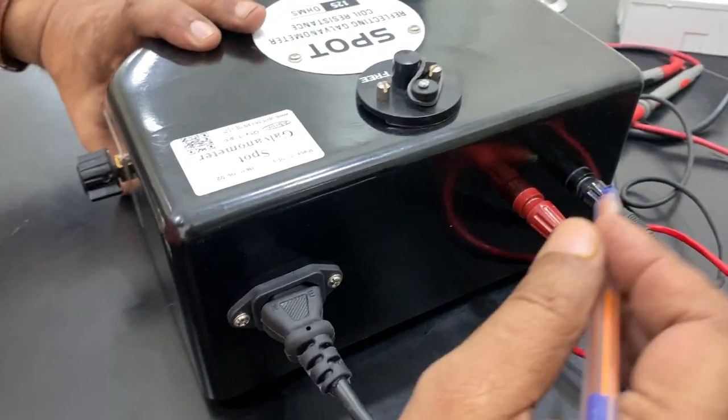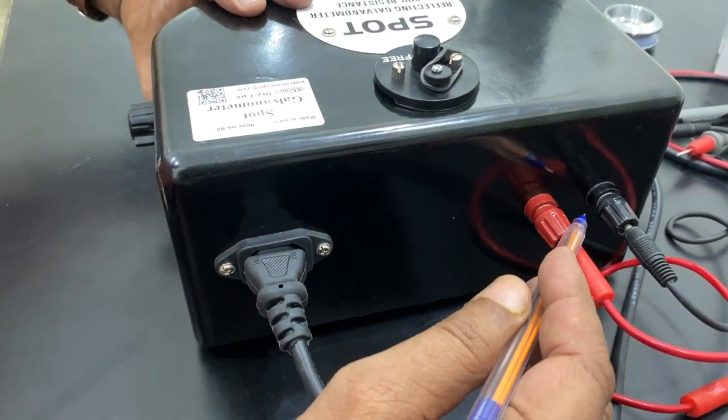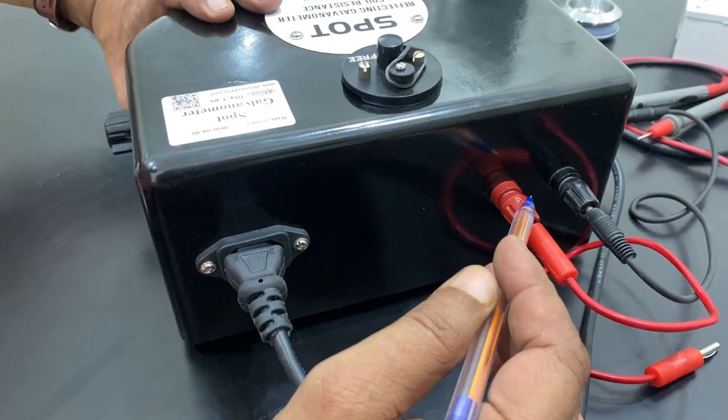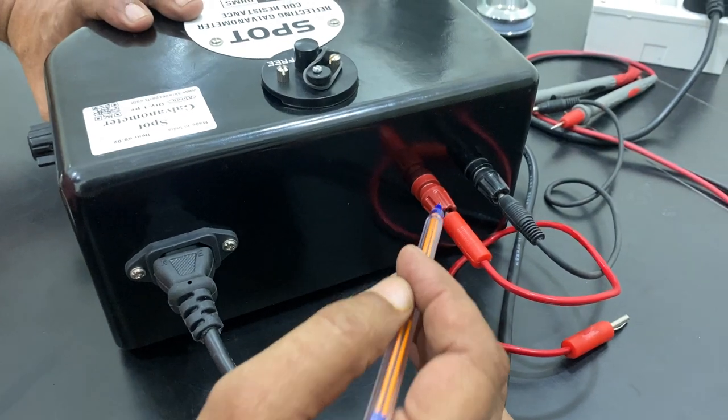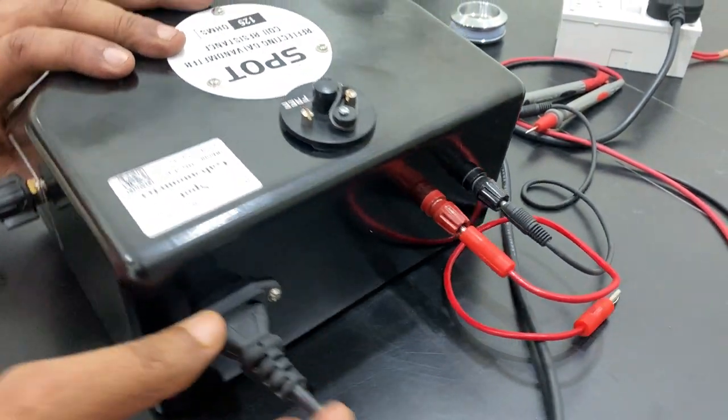On the back side there are two terminals to connect to the circuit for checking the sensitivity of many minor currents coming. Very sensitive meter, and main power I am connecting.